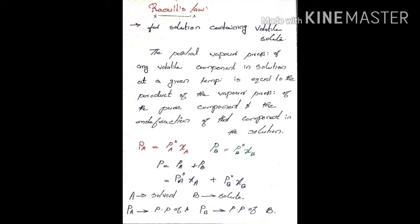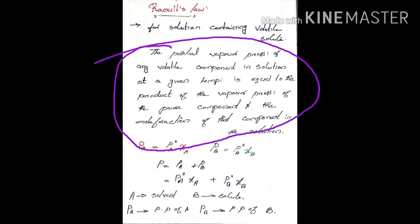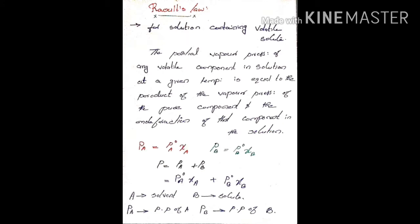According to Raoult's Law, for a solution containing a volatile solute, the partial vapor pressure of any volatile component in solution at a given temperature is equal to the product of the vapor pressure of the pure component and the mole fraction of that component in solution.